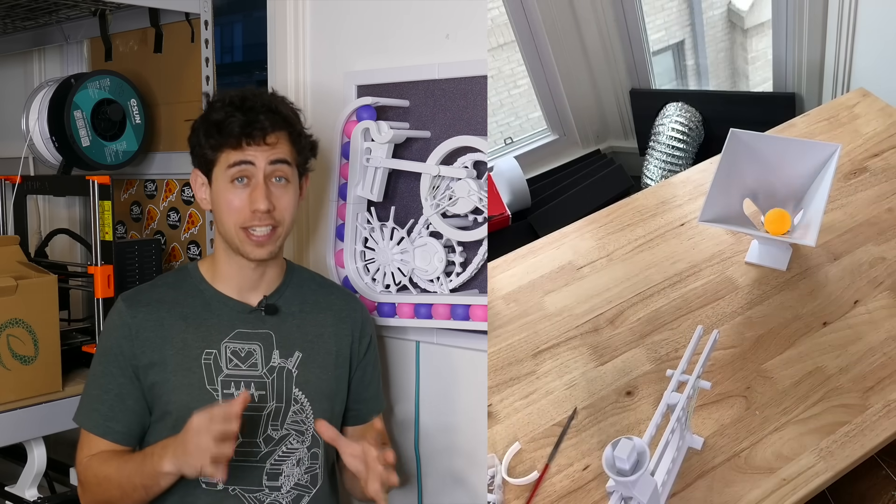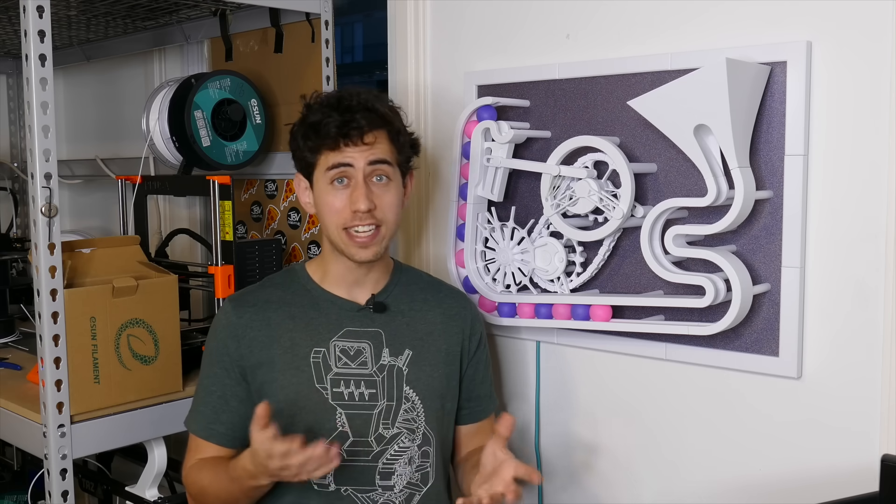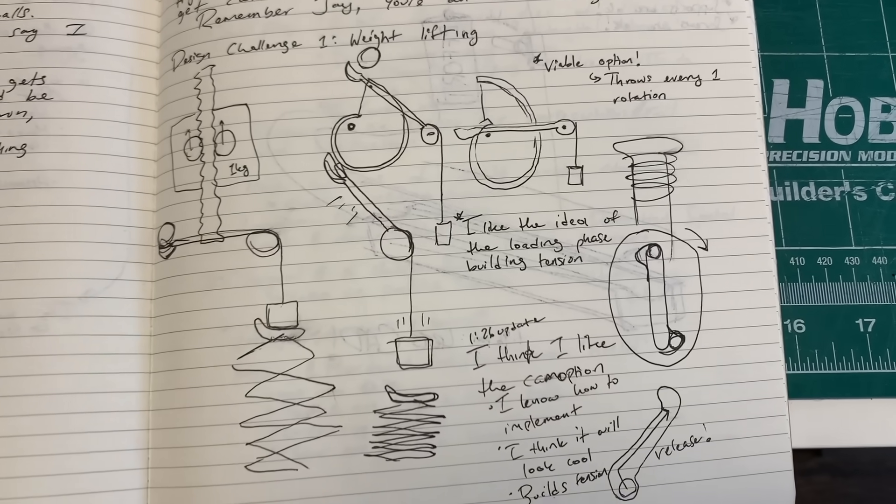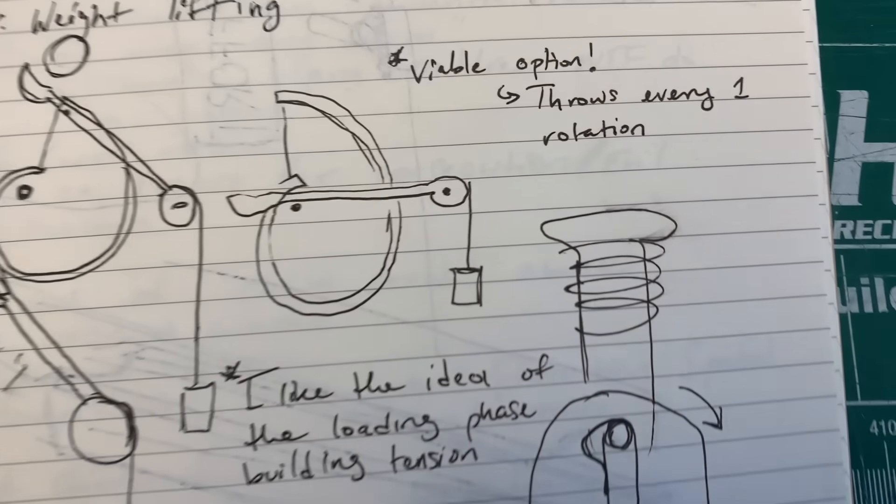Right away, it was clear that the elastic bands were superior to dropping the weight. Now that we were able to launch ping pong balls into the air, we just had to figure out how to do that with motor power. After brainstorming a couple of different mechanisms that I could use to charge up the elastic bands, I settled on this spiral cam.